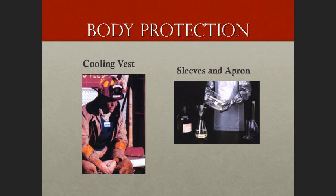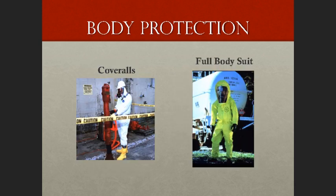Body protection is a very broad category. Some in health and safety think fall protection falls under it, but I consider fall protection its own type of PPE. Other types of body protection include cooling vests — NASCAR drivers wear them to prevent heat exhaustion in hot summer months — as well as sleeves and aprons for dealing with hazardous materials or chemicals.